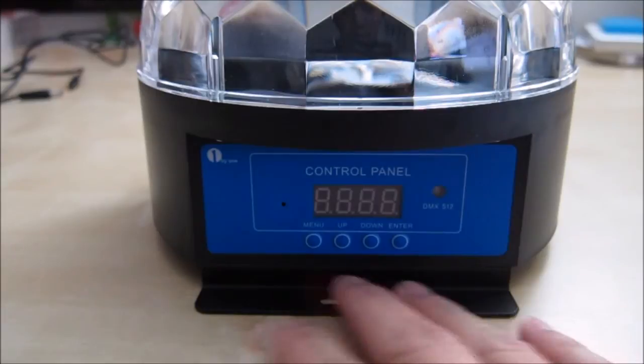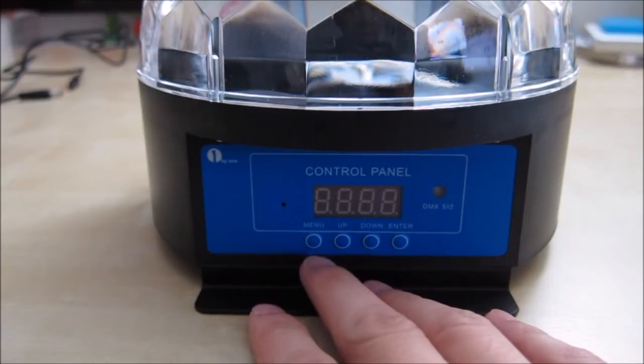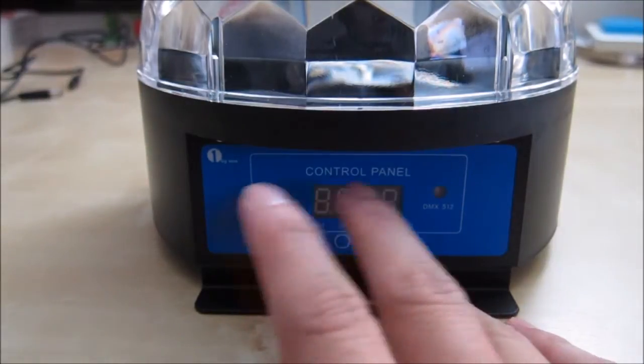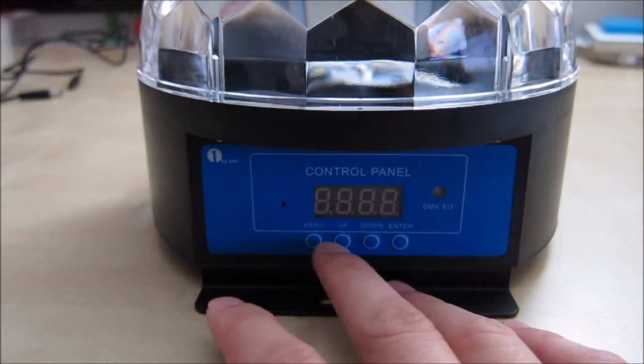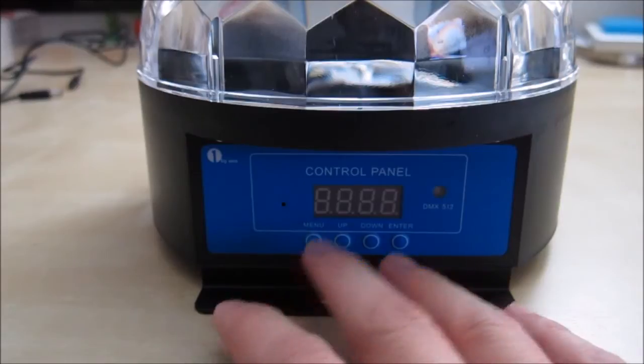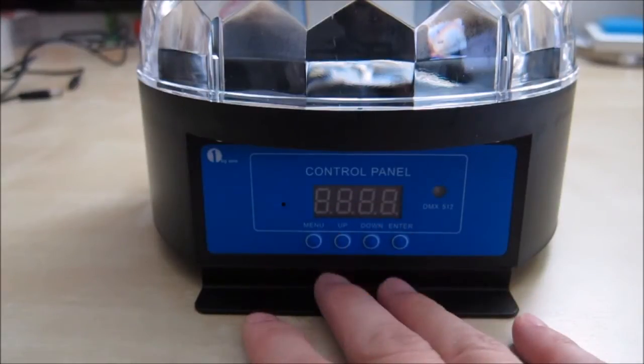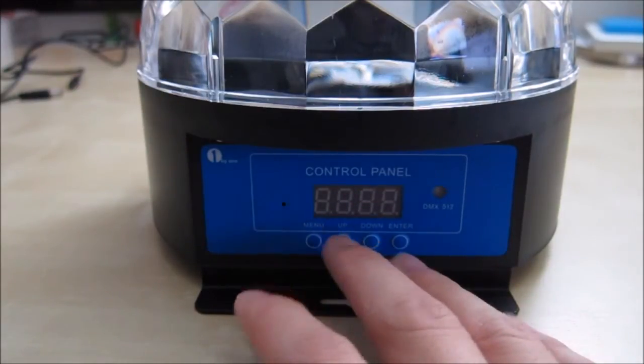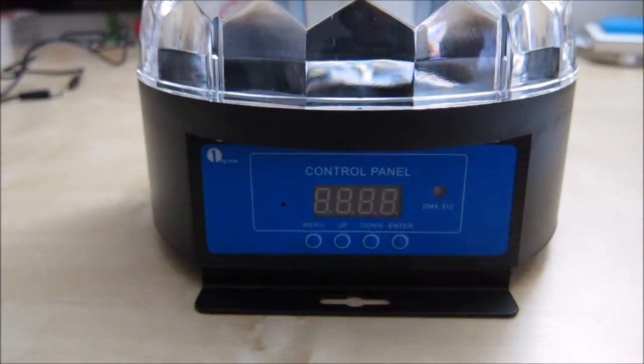For the control panel here, you have these four different buttons. You have menu which basically switches you between the different modes. You have automatic 1 to automatic 8, so those are A1 to A8. And you have sound, S1 and S2, and those are also accessible using the menu here.